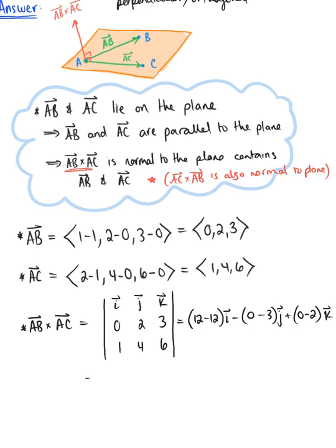This leaves us with, we have 0 i hat, minus a minus 3, so plus 3 j hat, and then minus 2 k hat.